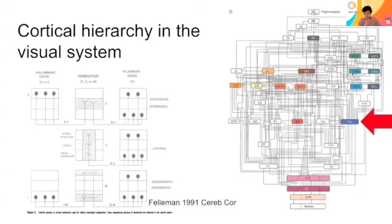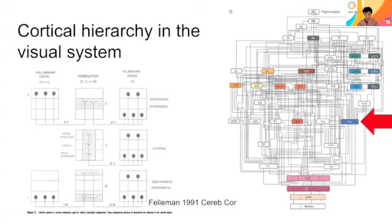To review where V4 is located in the cortical hierarchy: based on the Felleman and Van Essen diagram of laminar connectivity, V4 is located above V1, V2, and V3. This is part of the ventral visual pathway. On the right side is the ventral pathway and the left side is the dorsal pathway.